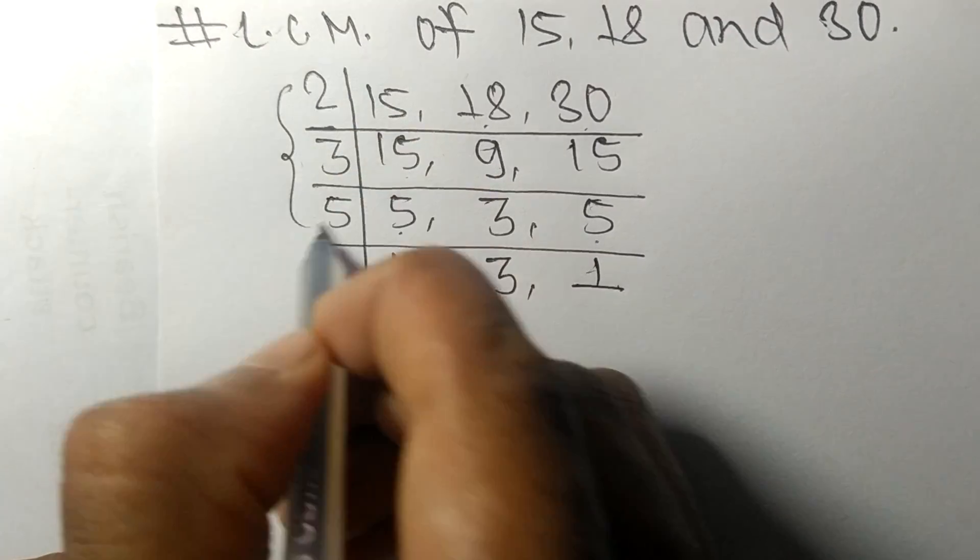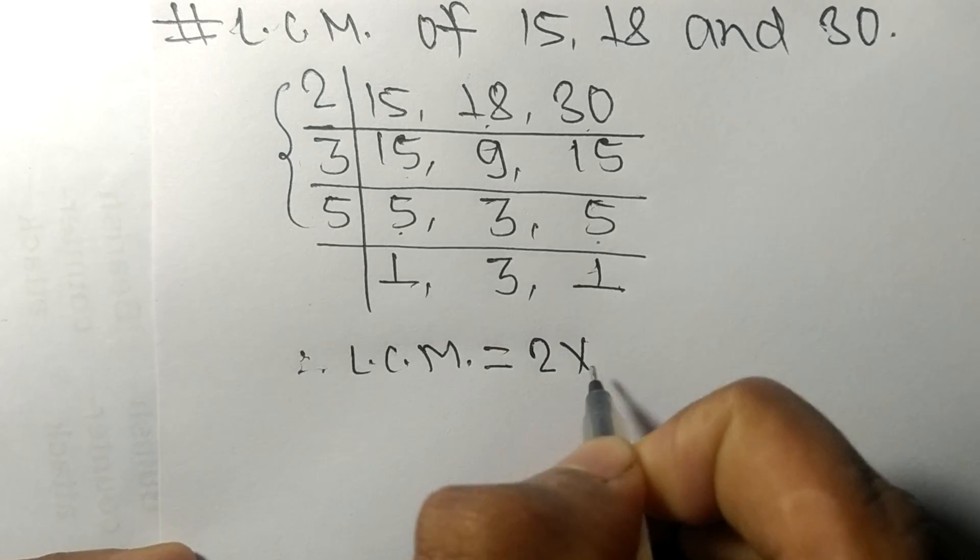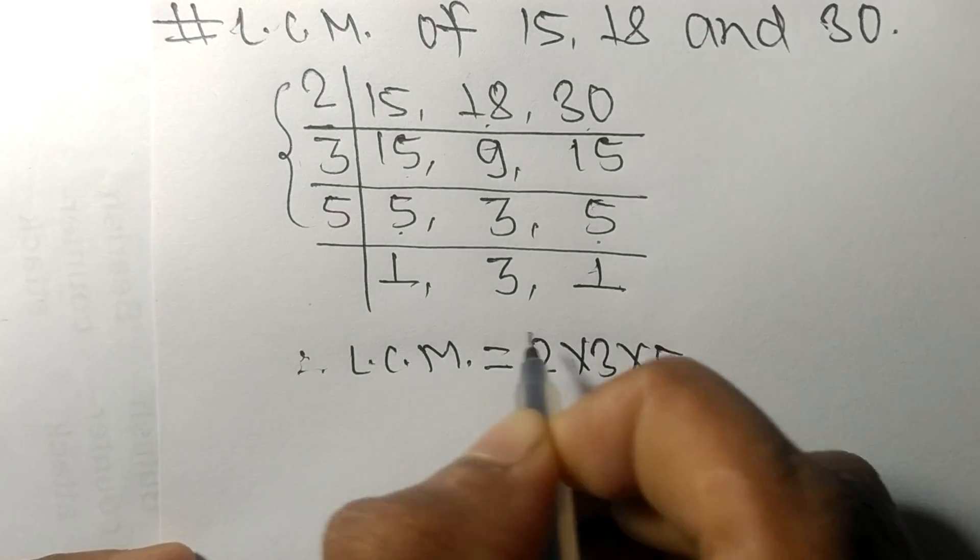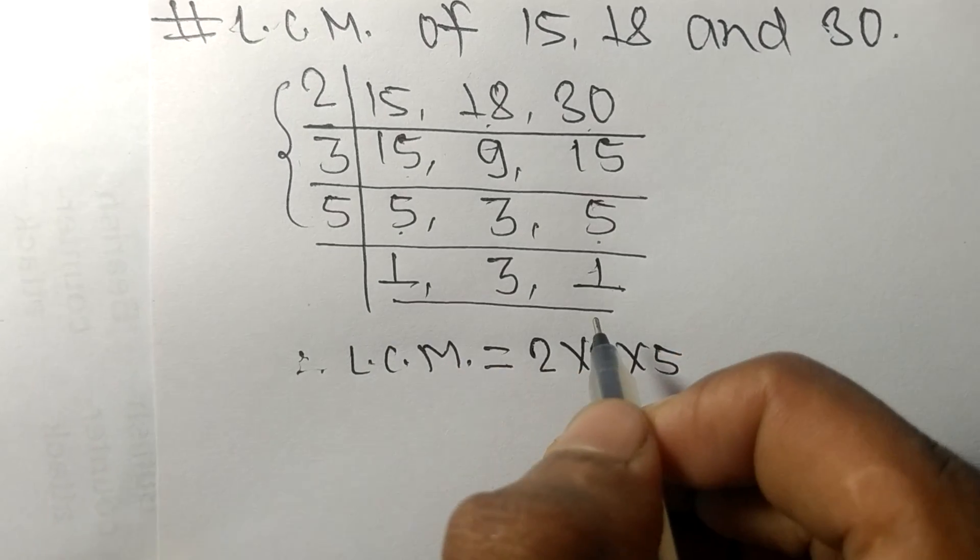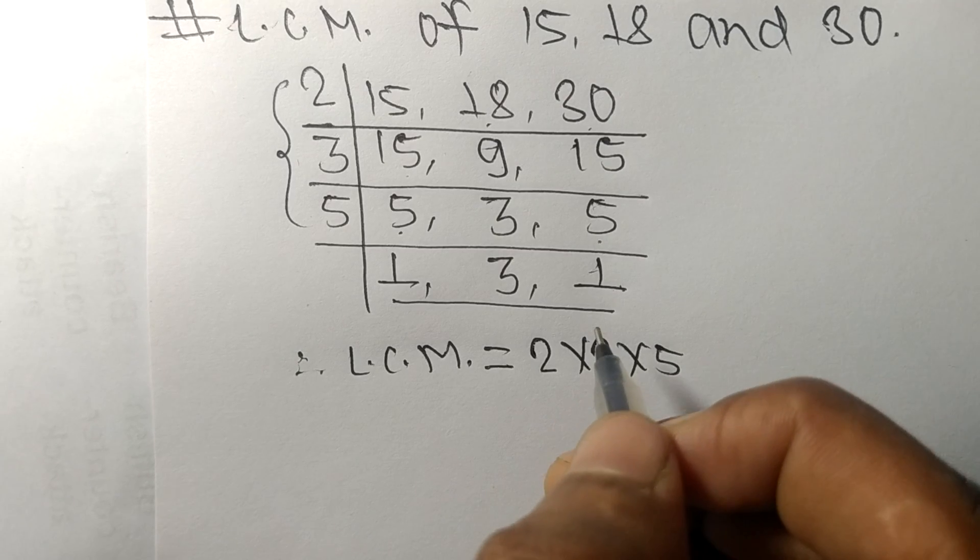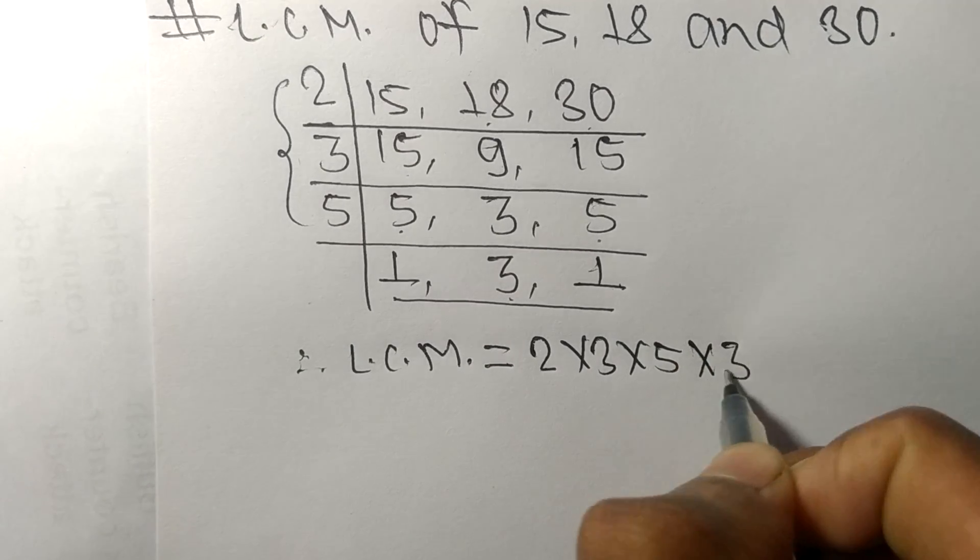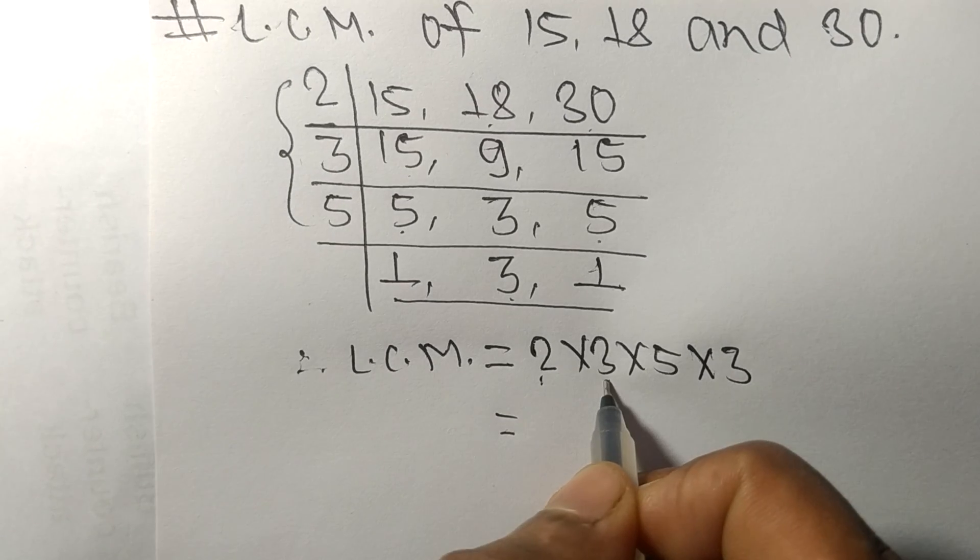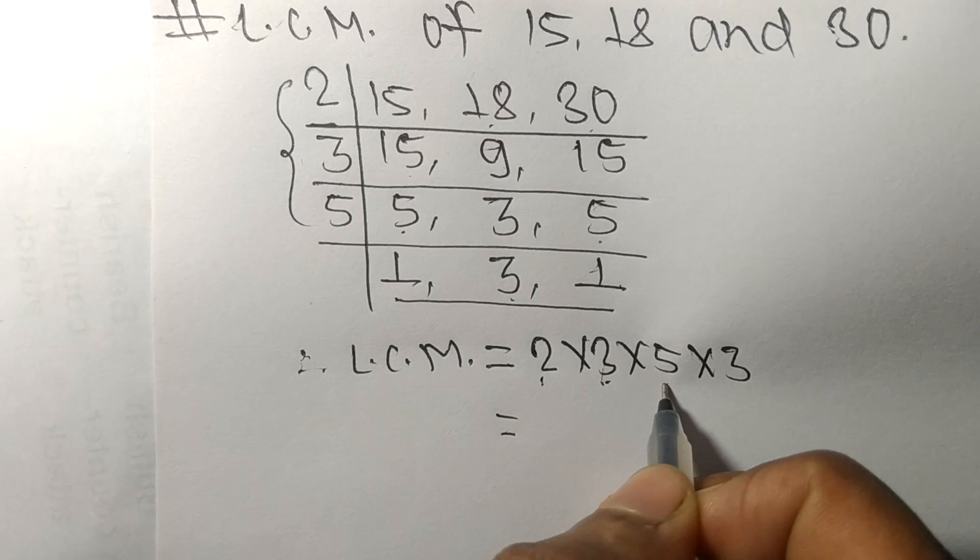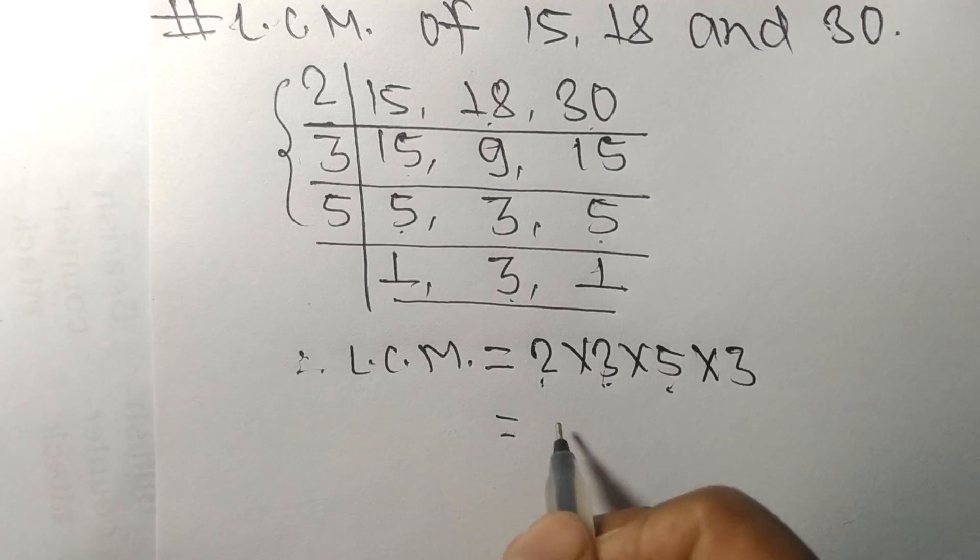Equal to, from this side, it is 2 times 3 times 5. From this side we choose the numbers greater than 1, that is 3, so multiply by 3. 2 times 3 means 6, 6 times 5 means 30, 30 times 3...